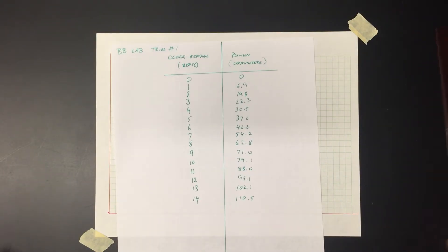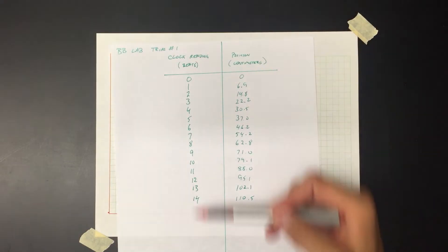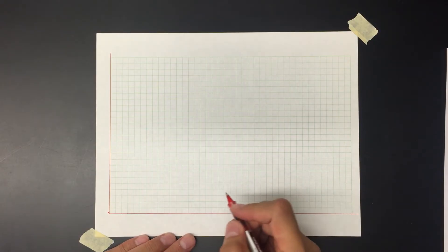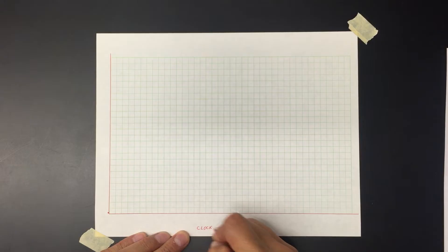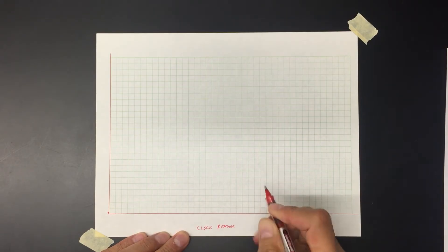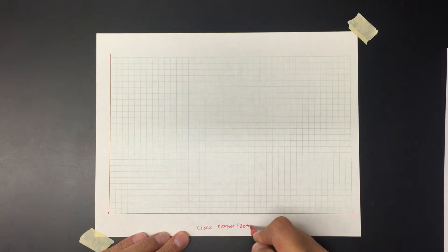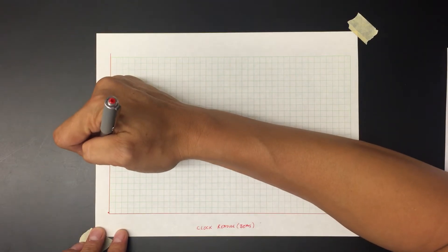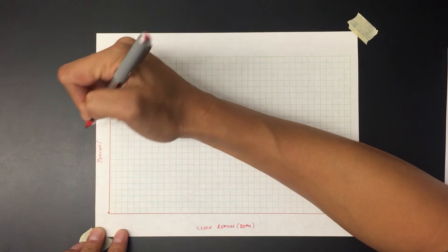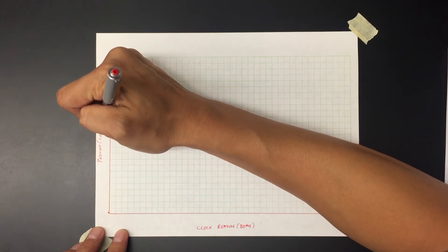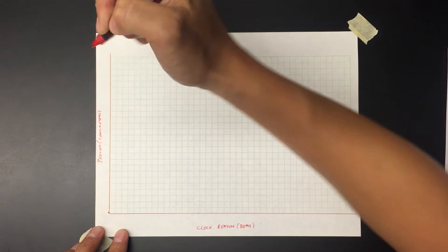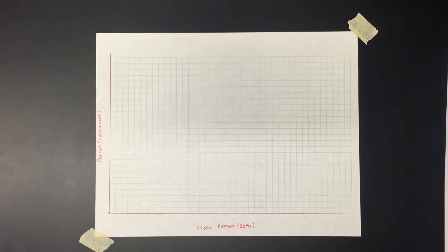I have to decide which data goes where. By convention, on our data table we've got the independent variable on the left and the dependent variable on the right. Also by convention, the independent variable goes on the x-axis and the dependent variable goes on the y-axis. I'm going to label both the quantity and the units on each axis — so on the x-axis I've got clock reading, and in parentheses the units: beats. On the y-axis we've got position, and the units are centimeters.